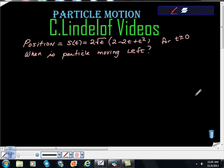C. Lindelof videos, AP Calculus particle motion. We have a position function s(t) = 2√t(2-2t+t²) for t ≥ 0, and we're asked when is the particle moving left. We know the particle is moving left when v(t) < 0.